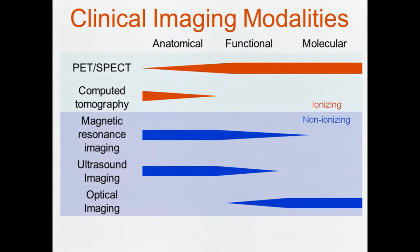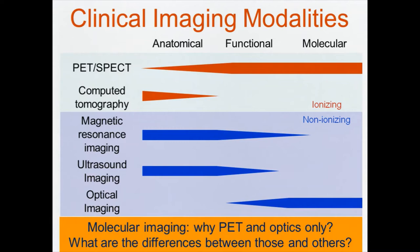What I want to do is look at all existing imaging modalities that we have today clinically available and sort of plot them in terms of what's the modality and what information it provides. There's a very important discovery you can make right away, especially since you're attending the World Molecular Imaging Congress: there are only two imaging technologies that provide molecular information — PET and optics only. The first question we should address is what's wrong with the other modalities, or why they, as is, cannot provide molecular information about imaged tissue, patient, sample, or small animal.